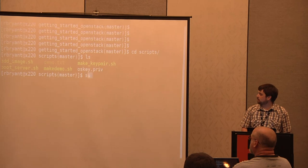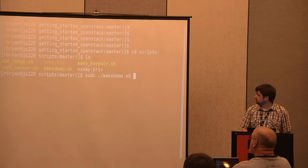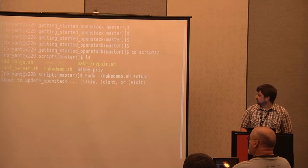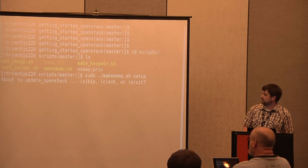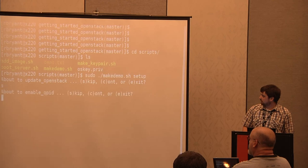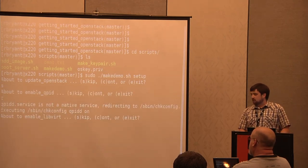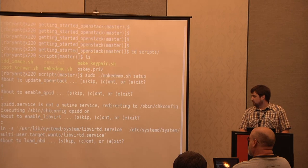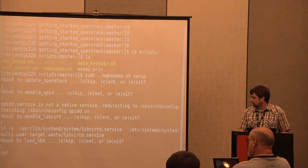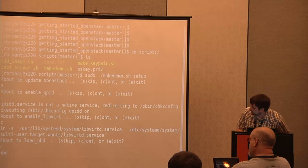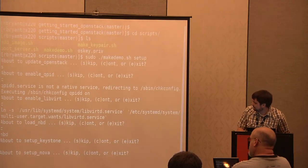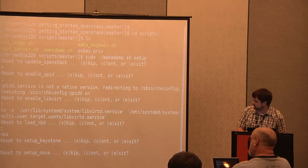I'm running a 'make demo' script that does all the stuff I just showed. It asks if I want to update the packages — I'll skip that since I already installed them in case internet wasn't working. The script enables Qpid (the message bus), enables LibVirt for starting virtual machines, and loads the NBD kernel module.